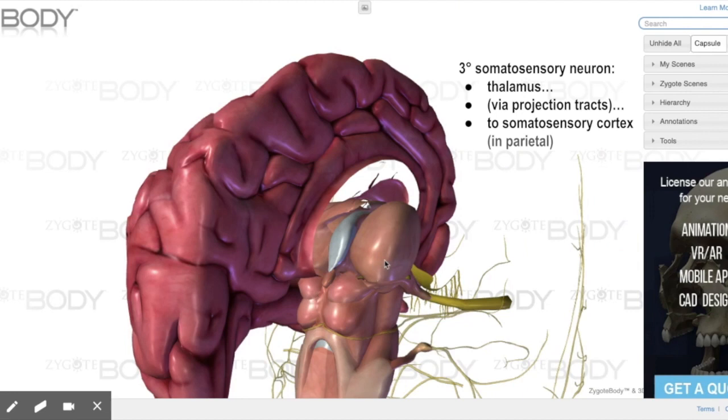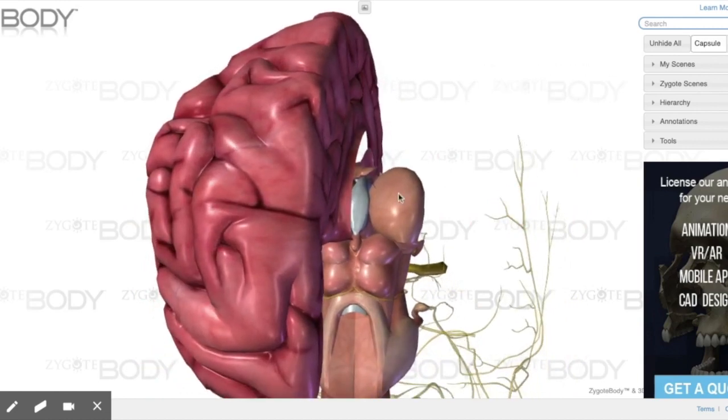If these were visual signals, the third or tertiary neuron in the pathway would have sent the signals to the occipital lobe. If these were auditory or equilibrium signals, the third neuron would take signals out to the temporal lobe. But in this case, we're talking about somatosensory, touch temperature, pain signals. These are going to go out to the parietal lobe, specifically the cortex of the parietal lobe.